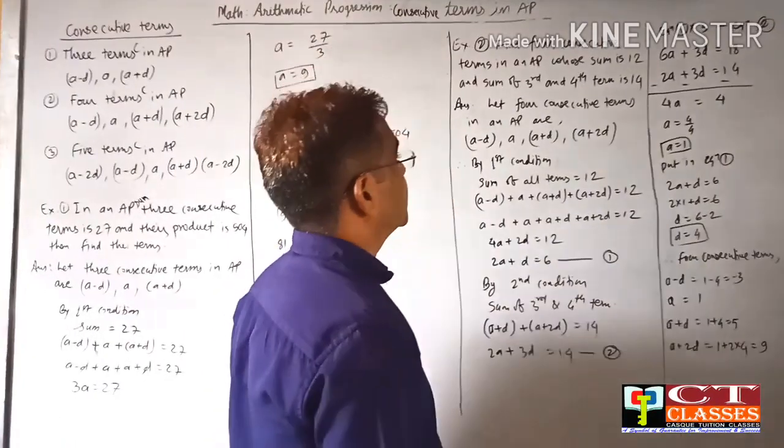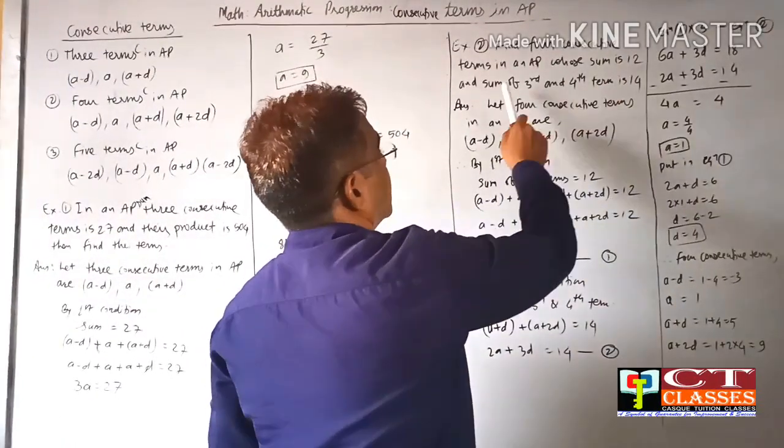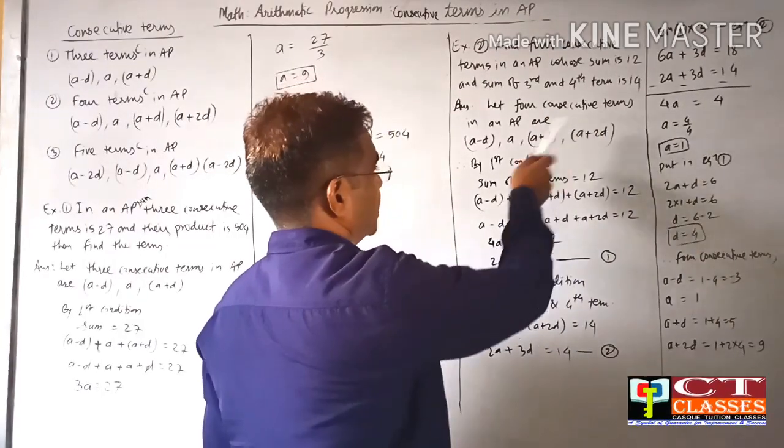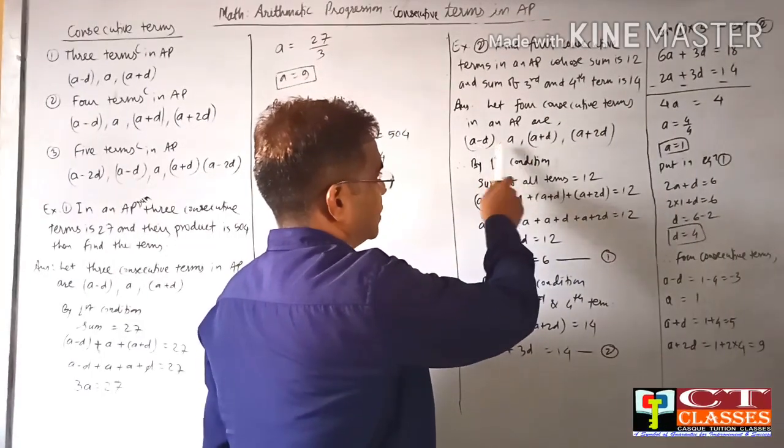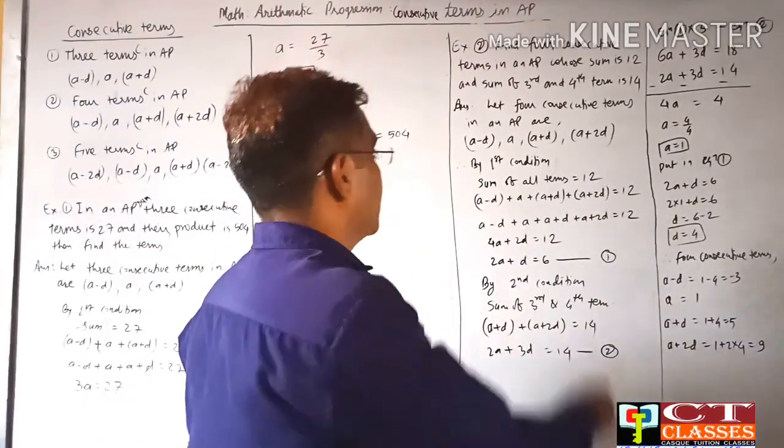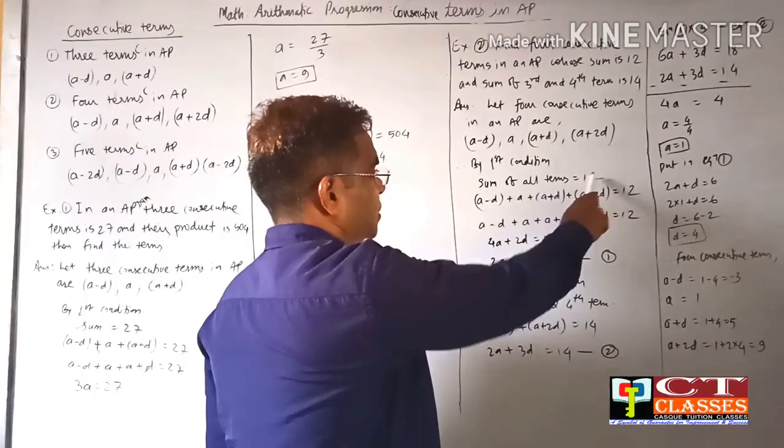Sum of 4 consecutive terms is 12, and sum of the last two terms is 14. The 4 terms are written as: a-d, a, a+d, a+2d. First condition: sum of four terms is 12.